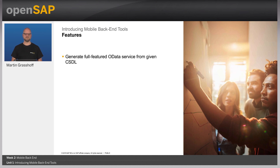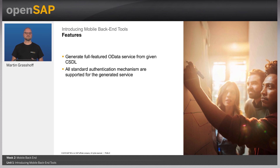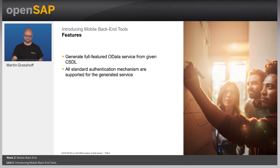There are even more features to point out. First, there's the CSDL — a description language of OData services that describes the service itself, allowing us to generate the service in a model-driven development approach. It also includes all the security features you need: to secure your backend and have user authentication, you simply declare the authentication scheme and you're ready to go. The generated service is very extensible — you can implement your own backend logic without interfering with your model. You can regenerate as often as you want, change and extend it, and your existing extensions will not be overwritten.